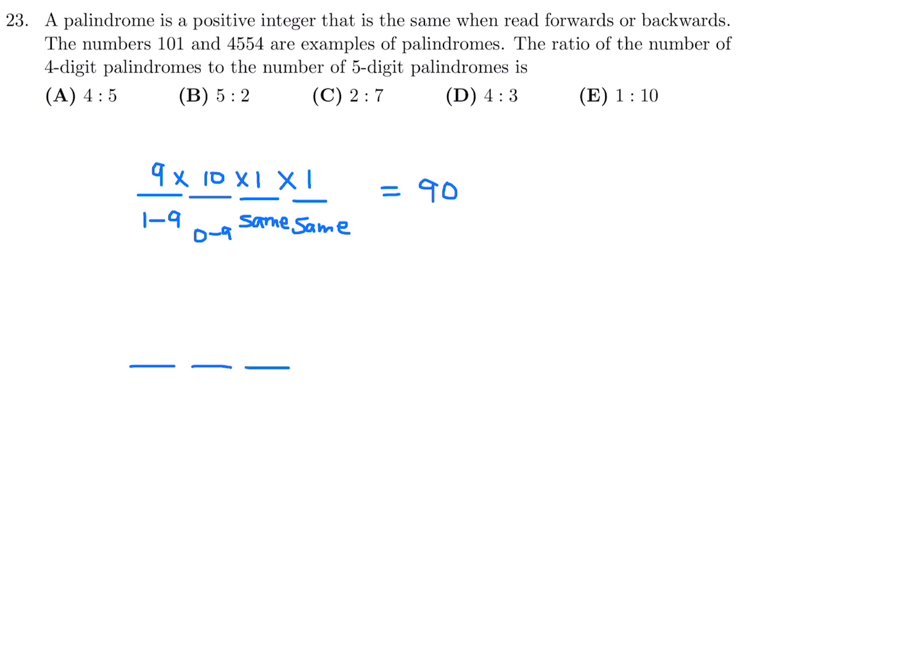Now we have to figure out the same kind of story but for 5 digits. For the first digit it can't be a 0. It can be anywhere from 1 to 9. So we've got 9 choices. The last one will be the same as the first digit. So we have one possible choice there. Second digit, same thing. 0 to 9 this time because zeros are allowed. I've got 10 choices. And this has got to be the same as that one. And then the middle one, that can be any number from 0 to 9. So we've got 10 choices. So this is 9 times 10 times 1 times 1 times 10 and that is 900. So the ratio of the number of 4-digit palindromes, which is 90, to the 5-digit palindromes, 900, is 1 to 10. And 1 to 10 is represented by choice E.